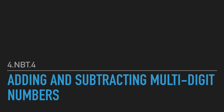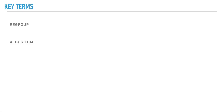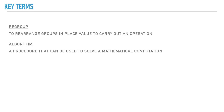Welcome back! In today's lesson we're going to learn how to add and subtract multi-digit numbers. We're going to be using a couple of key terms: the first is 'regroup' and the second is 'algorithm.' Regroup means to rearrange groups and place value to carry out an operation, and an algorithm is a procedure that can be used to solve a mathematical computation.